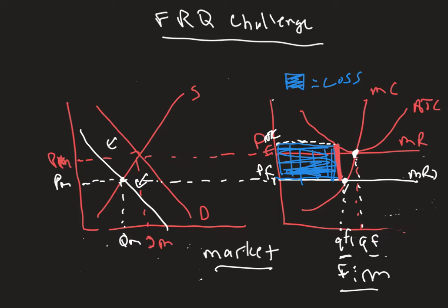At a certain point, firms are going to leave. If this were a constant cost industry, the supply curve would shift left and firms would leave until the price returned exactly to the original price. But this is an increasing cost industry, and we also have a loss, so firms are leaving.